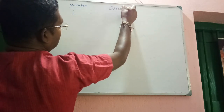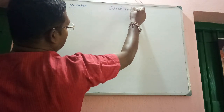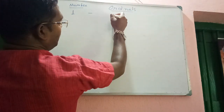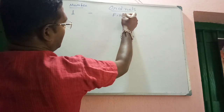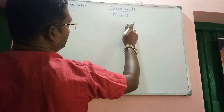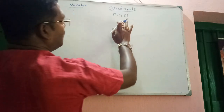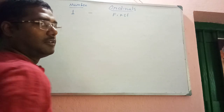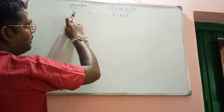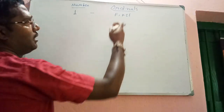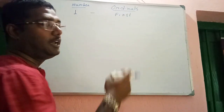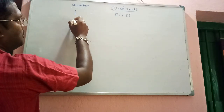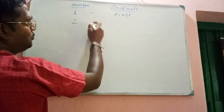Let's go. Number one: the cardinal is one and the ordinal will be first. If I, A, R, S, T — somebody write it down like this. Okay, first. Number is one and ordinal will be first.